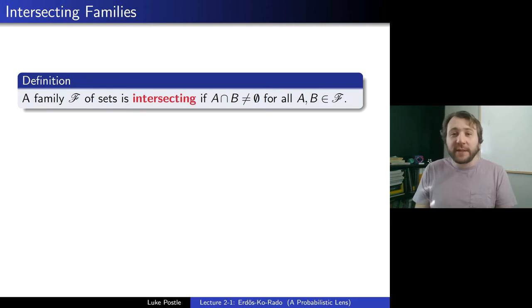Today we'll be focusing on intersecting families. A family F of sets is intersecting if A intersect B is non-empty for all A, B in F. So quite a natural term, intersecting families.